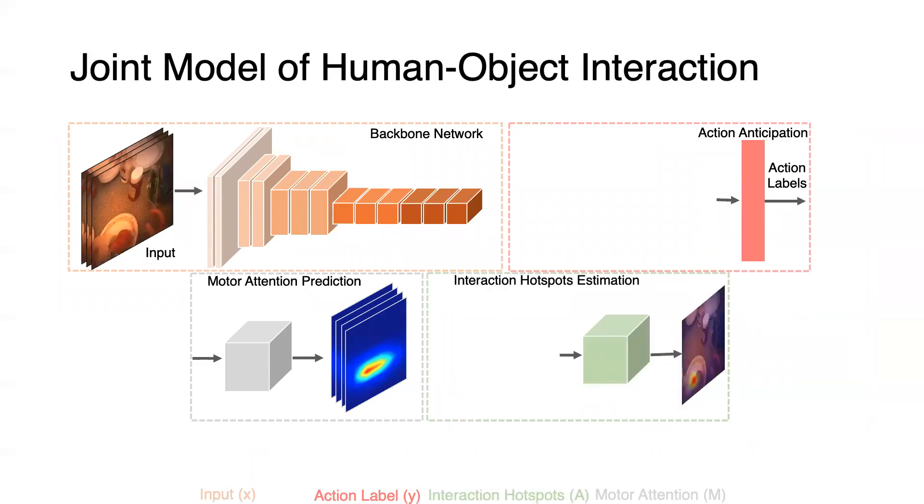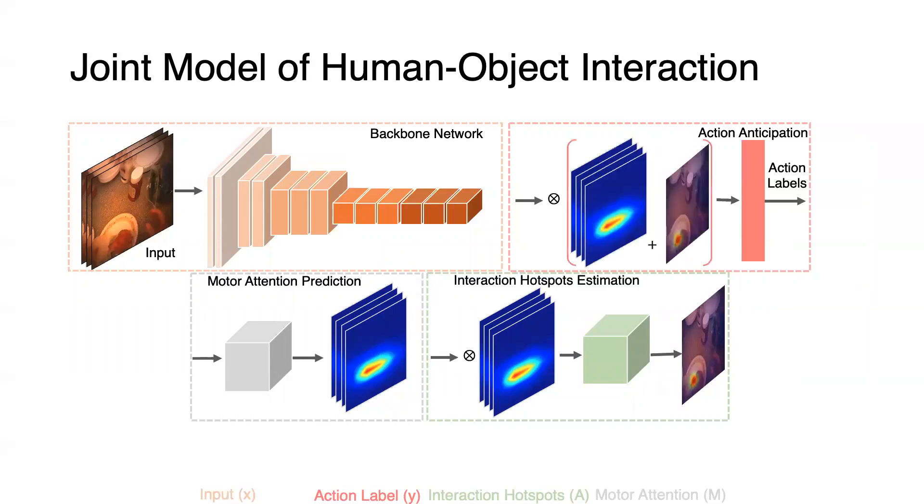Our model first uses motor attention to index important spatial-temporal features for interaction hotspots estimation, and then further uses motor attention and interaction hotspots for action anticipation. Therefore, we have the following conditional probability.